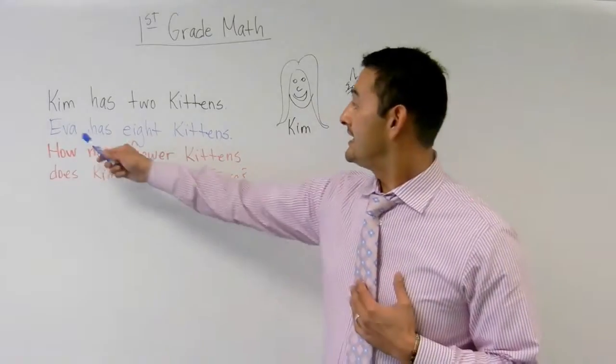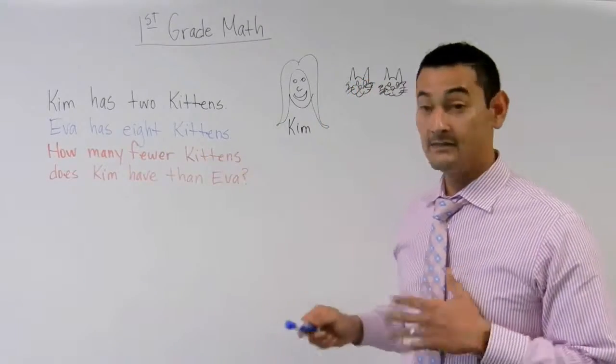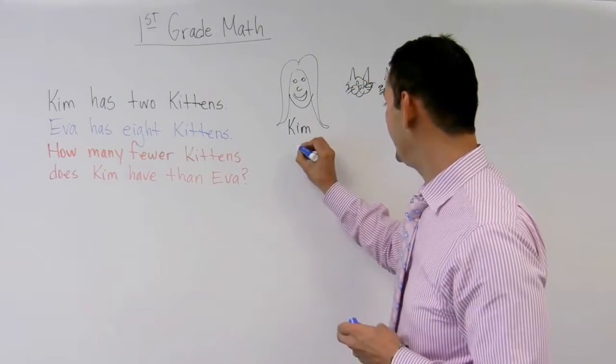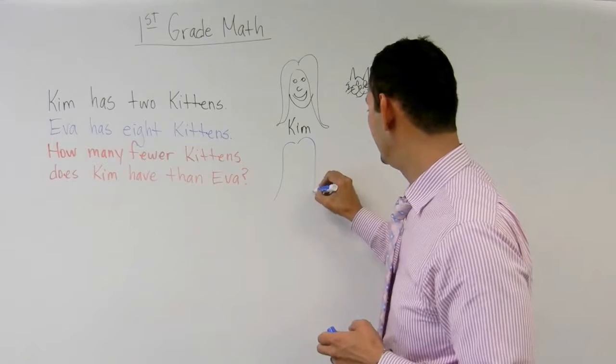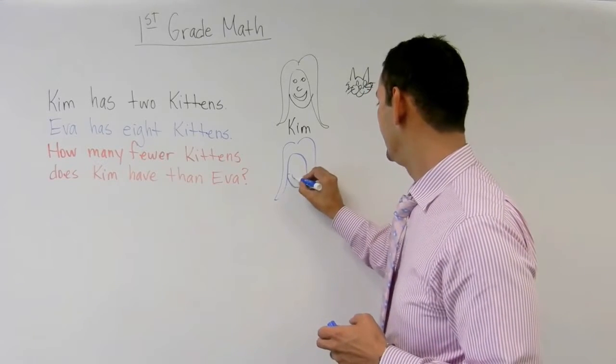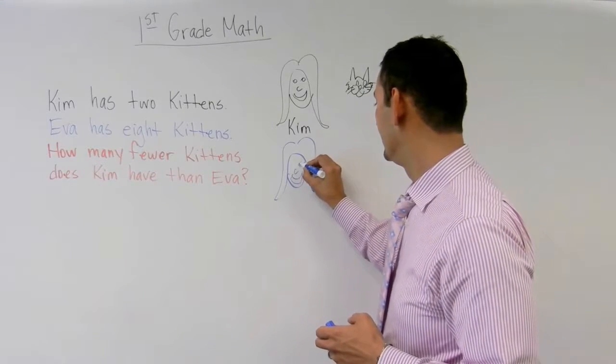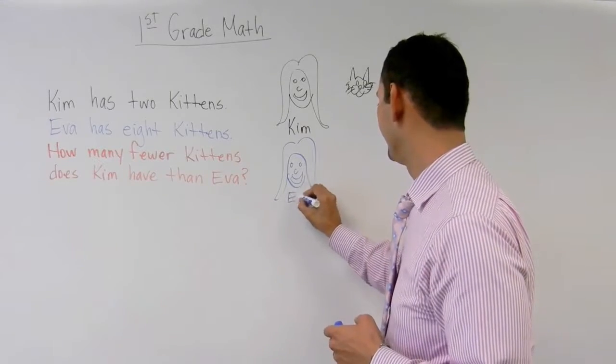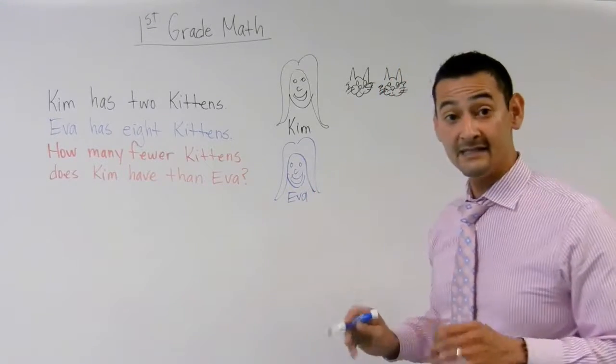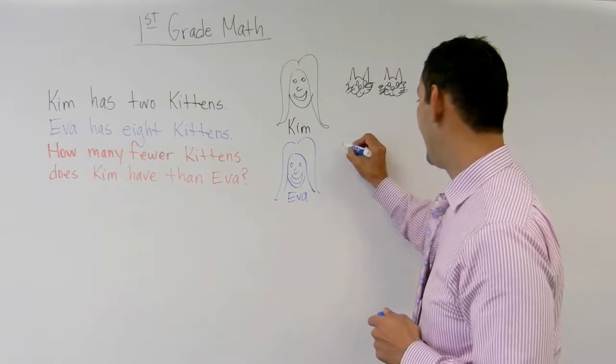The next piece says Eva has eight kittens. Alright, so I'm going to go ahead and draw Eva. And there you go, so that's Eva. And how many kittens does Eva have? Well, she's got eight kittens.